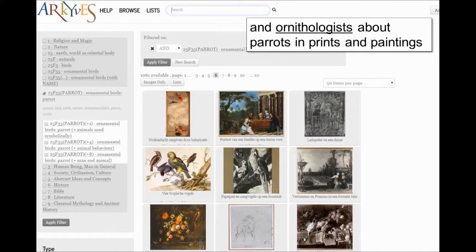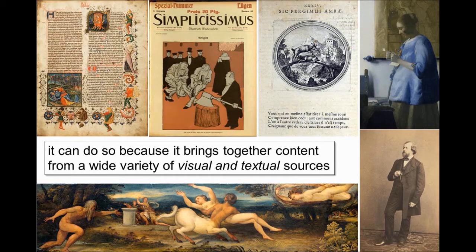A group of people interested in a very different group of images might be ornithologists, for instance, interested in all kinds of images with parrots. Parrots might be from still lives, but they may also be from emblem books or quite different types of material. Archives can be so broad, ranging from parrots to alcohol abuse, because it brings together content from a hybrid, wide variety of both visual and textual sources, from photographs to early modern emblem books.